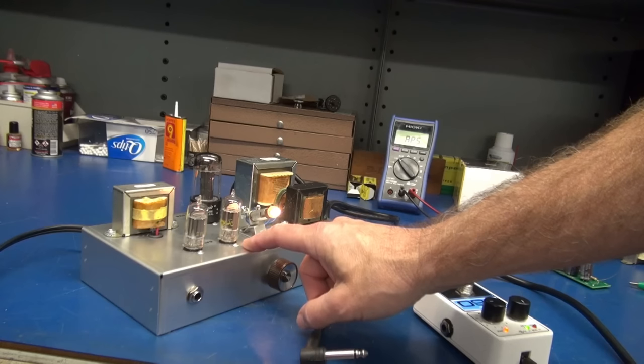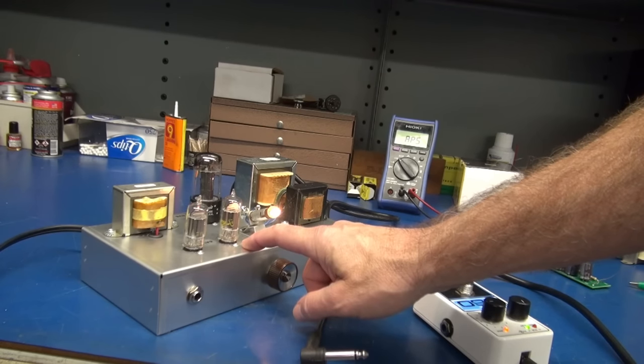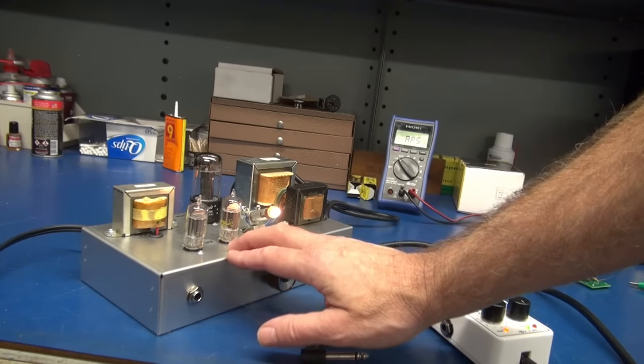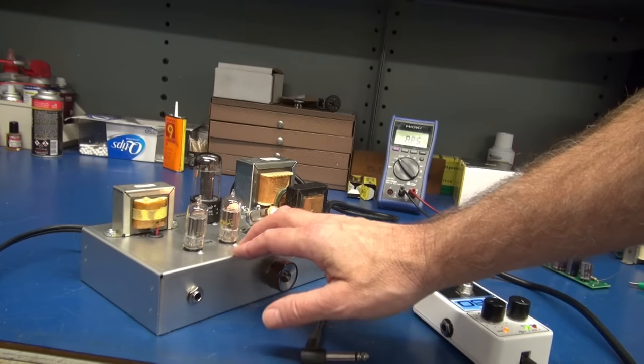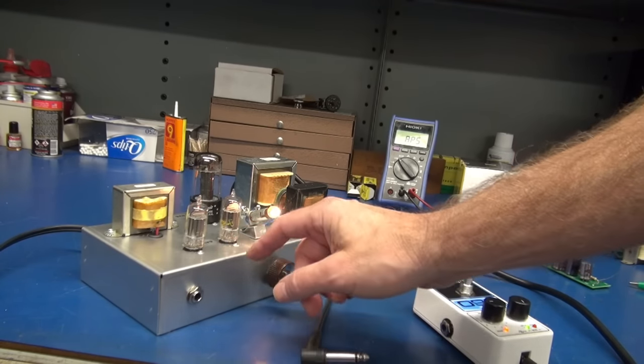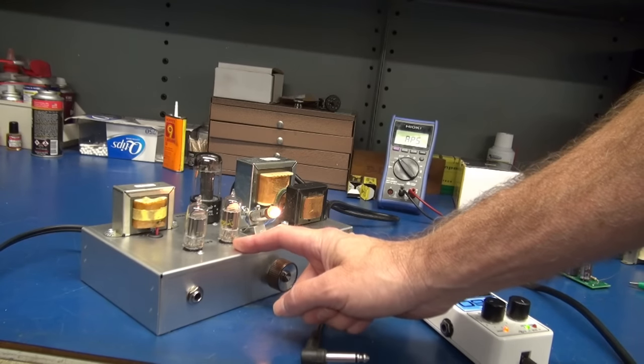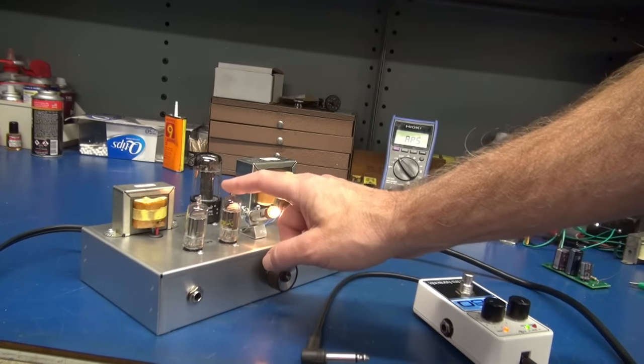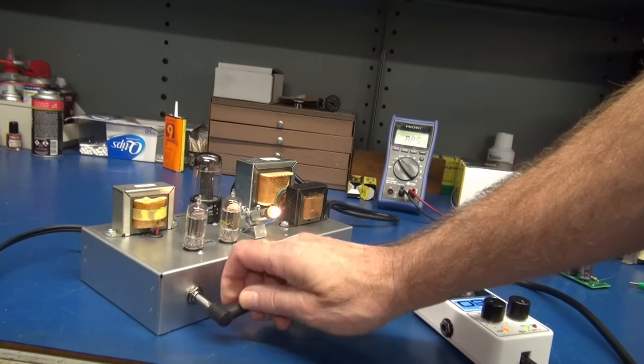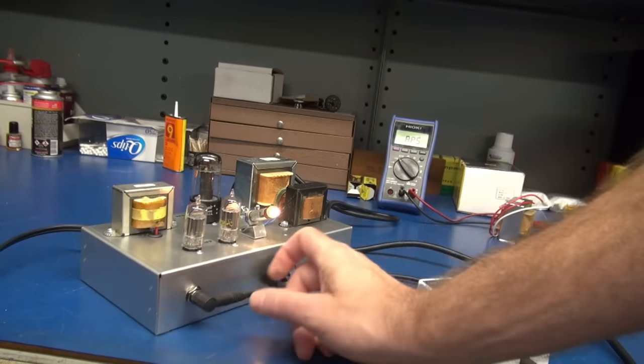You can see that we have two single triodes here for the preamp. I elected to use a pair of 6av6s which are about five bucks a piece and give you the same gain as a 12ax7. But the 12ax7 is about a $35 tube. So as another cost reduction, I went ahead and utilized the 6av6s. All right, let's hook up my looper and listen to this amp.